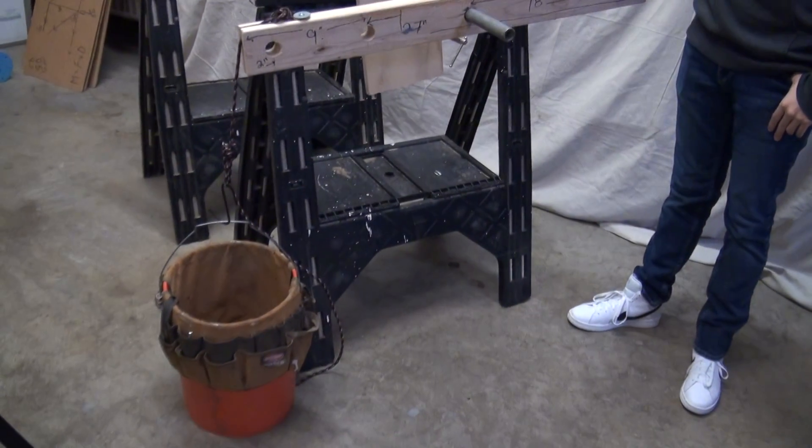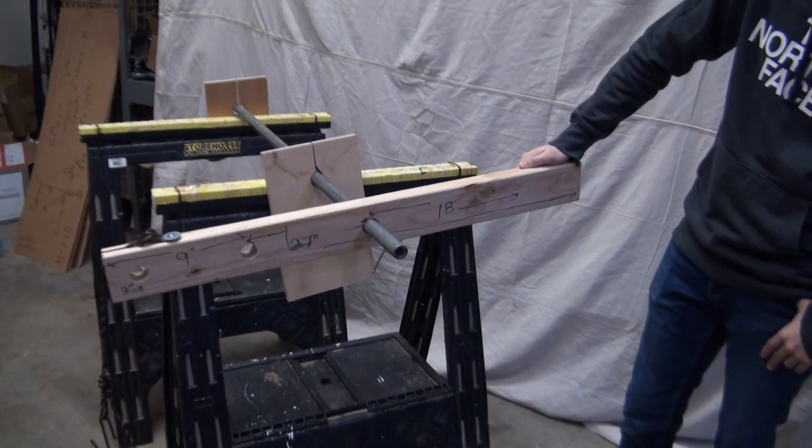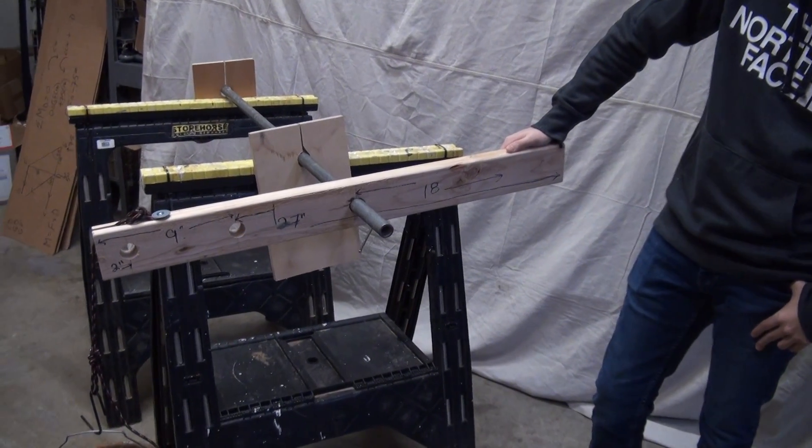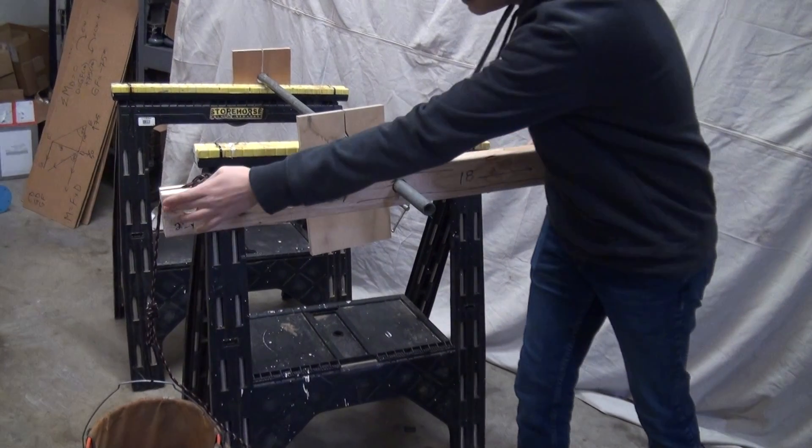So we've got a load of, let's say, 50 pounds and a lever. The lever is 36 inches long and the pivot point is in the middle: 18 inches, 18 inches.